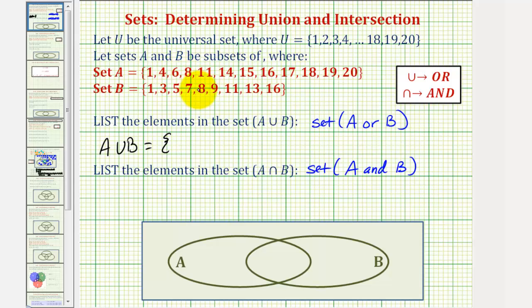So we'd have 1, 3, 4, 5, 6, 7, 8, 9, 11, 13, 14, 15, 16, 17, 18, 19, 20. All these elements are in A or B.